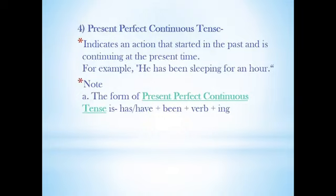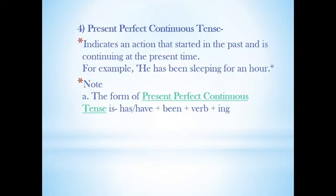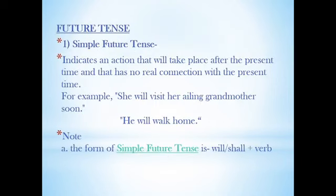Present perfect continuous tense indicates an action that started in the past and is continuing at the present moment. For example: 'He has been sleeping for an hour.' The form is 'has/have' plus 'been' plus verb with '-ing.' Since it is a perfect, continuous, and present tense, it must have 'has/have' plus 'been' plus the '-ing' form of the verb. For example: 'He has been sleeping' — 'has been' is added and 'sleep' becomes 'sleeping.'